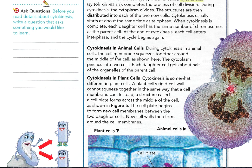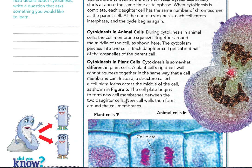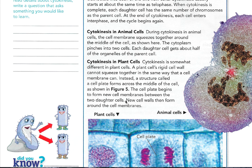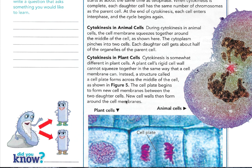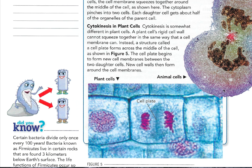During cytokinesis in animal cells, the membranes squeeze together around the middle of the cell. Each daughter cell gets about half of the organelles of the parent cell. Cytokinesis is somewhat different in plant cells. A plant cell's rigid cell wall cannot squeeze together in the same way that a cell membrane can. Instead, a structure called a cell plate forms across the middle of the cell. The cell plate begins to form new cell membranes between the two daughter cells, and new cell walls then form around the cell membranes. You can see the cell plate in these actual photographs.